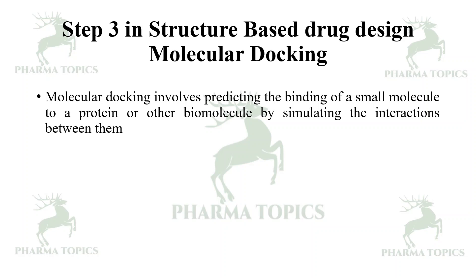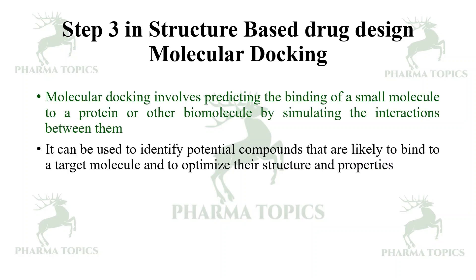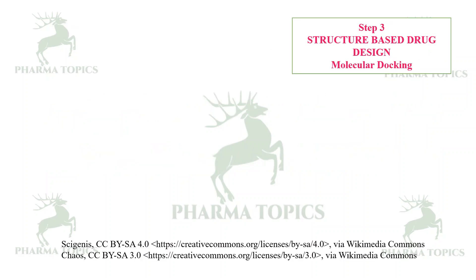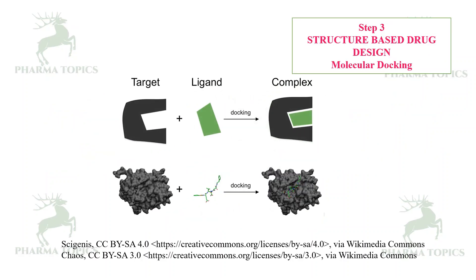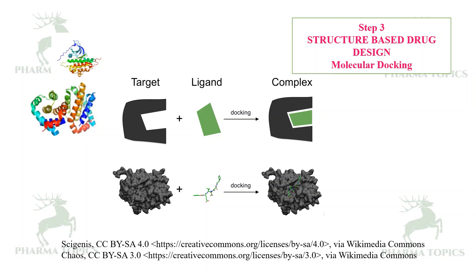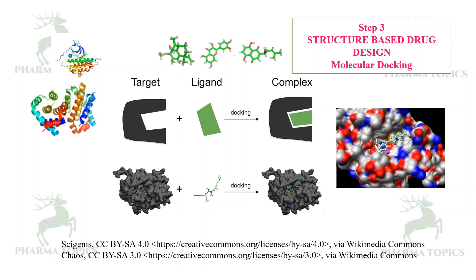Step 3 is molecular docking. Molecular docking involves predicting the binding of a small molecule to a protein or biomolecule by simulating the interactions between them. It can be used to identify potential compounds likely to bind to a target molecule and to optimize their structures and properties. First, you obtain the target protein, then the target ligands, perform molecular docking, and study the interactions.